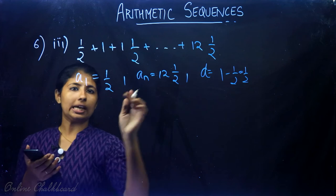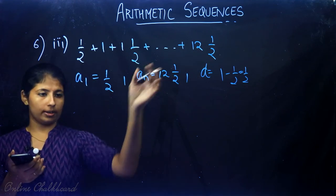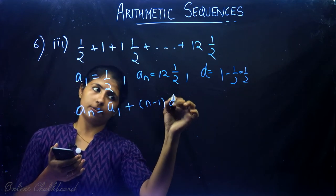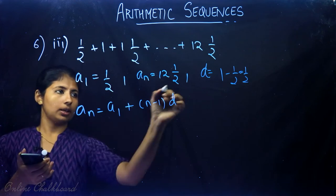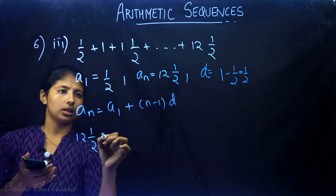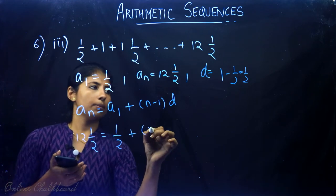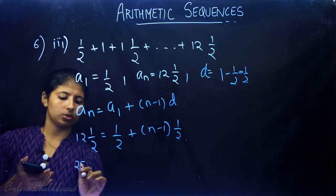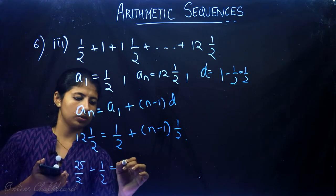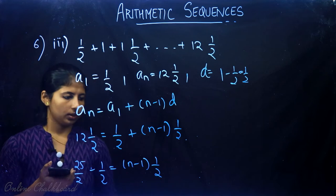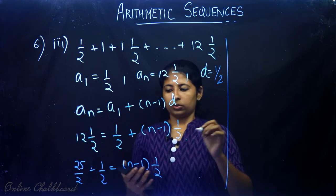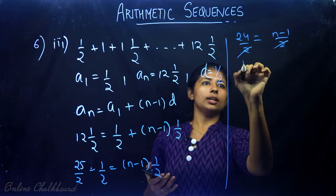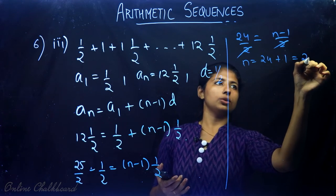Now, using the nth term formula: nth term equals ½ plus (n minus 1) times ½. Simplifying, nth term equals n/2. Setting this equal to 25/2 (which is 12½), and cancelling the 2, we get n equals 25.